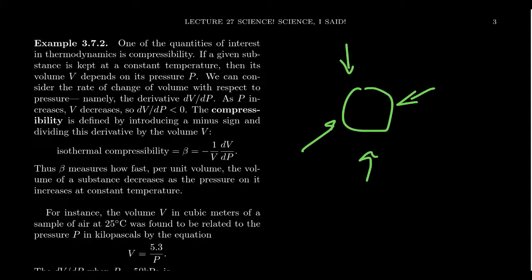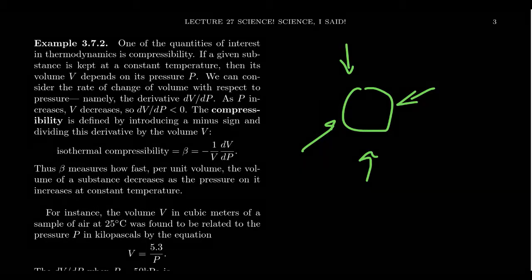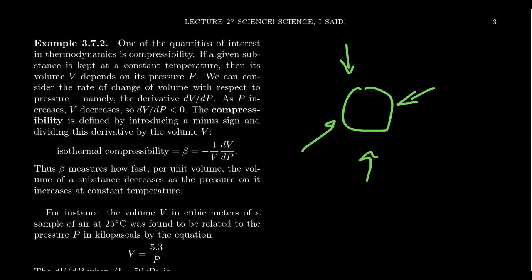So if a given substance is kept at a constant temperature, then its volume V depends on its pressure P. So this is a very important principle from chemistry here, that the volume, pressure, and temperature of a gas, they're all related to each other, but it's not exactly the same thing.